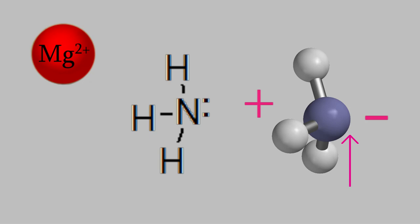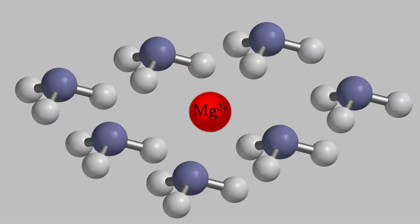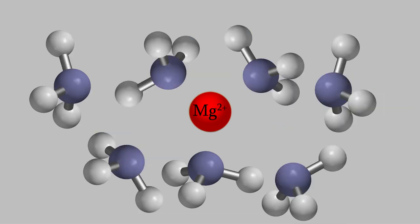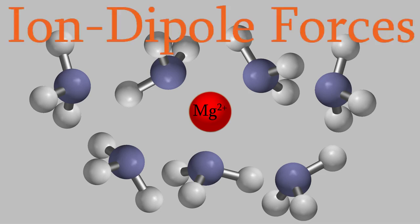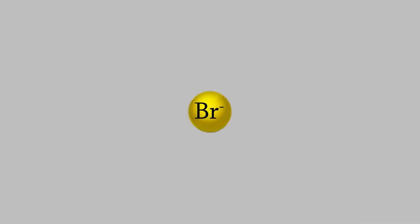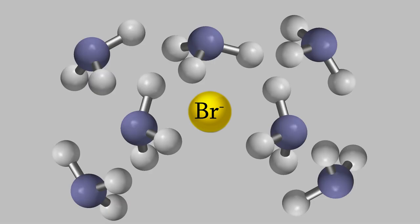Because it has a negative charge, the nitrogen end gets attracted to the positively charged magnesium. If the magnesium is placed in a group of ammonia molecules, the ammonias will orient so that their nitrogens are pointing toward the magnesium ion. This is an example of an ion-dipole force. The same is true if we have a negatively charged ion, like bromide — in that case, the positively charged side of the ammonia molecules will be attracted to the ion.